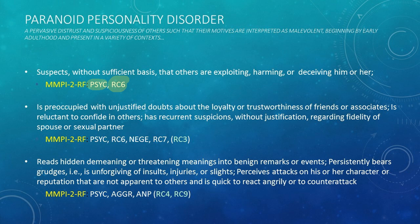For criteria such as preoccupation with unjustified doubts about loyalty of friends, reluctance to confide in others, and recurrent suspicions regarding fidelity of a spouse or sexual partner — we would expect the same constellation of thought dysfunction scales: RC6, measuring ideas of persecution and mistrustfulness, and psychoticism. Additionally, negative emotionality and RC7 are included. Both measure negative emotionality, with the former linked more to dispositional aspects and RC7 being a collection of various negative emotions, some more transient in nature.